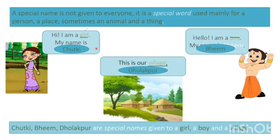Chutki — jo ladki ka naam hai. Bheem — jo ladke ka naam hai. Dholakpur — jo gaon ka naam hai. Woh special words hain.